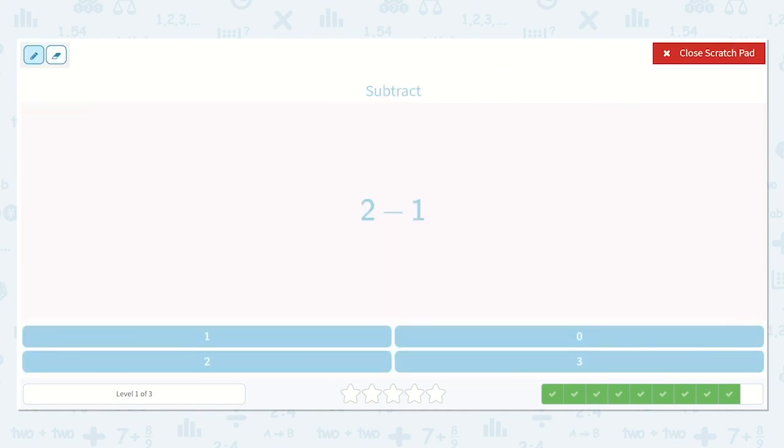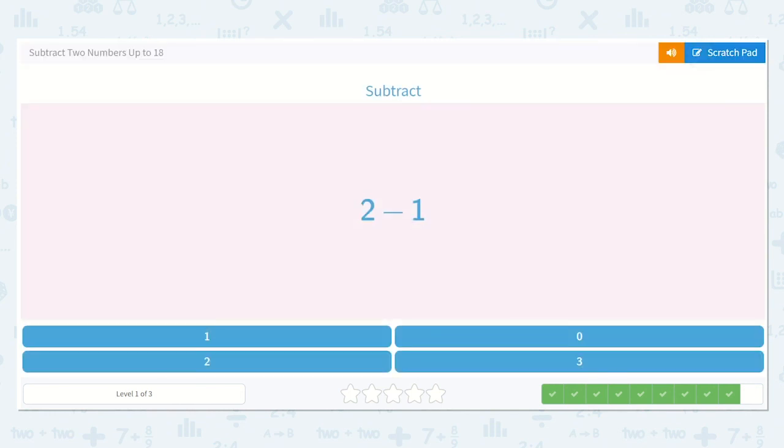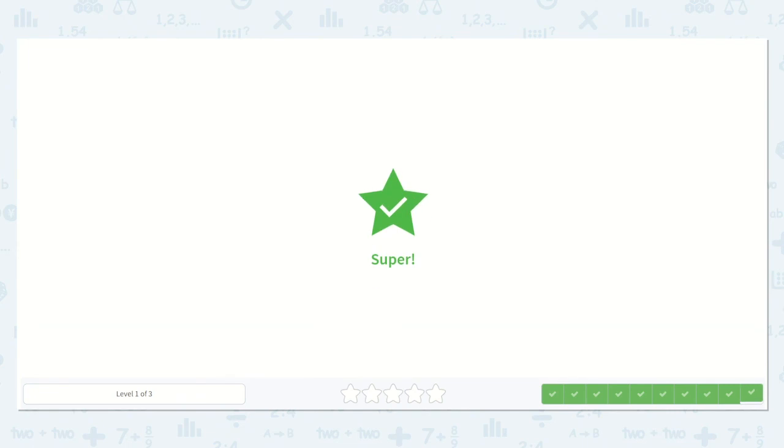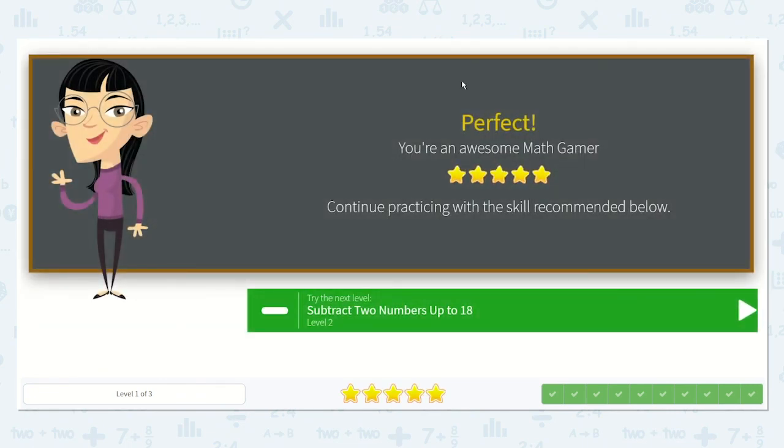Now we have 2 minus 1. Do you remember this one? What do you think the answer is? Yes, 1. Because if we have 2 and we take one of those 2 away, we're just left with 1. Brilliant. You did such a great job today. Thank you.